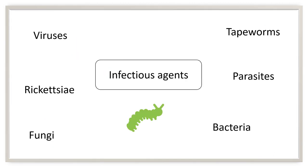The next cause of cell injury is infectious agents. We are dealing with the COVID-19 pandemic, which is cell injury by viruses. Rickettsiae, fungi, tapeworms, parasites, and bacteria are also microorganisms which cause injury to the cell, and these come under injury due to infectious agents.